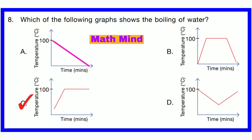In option A, temperature decreases from 100 degrees Celsius, which is wrong. In option B, after reaching 100 degrees Celsius, temperature decreases, which is wrong. In option D, temperature decreases from 100 degrees and then increases, which is wrong.